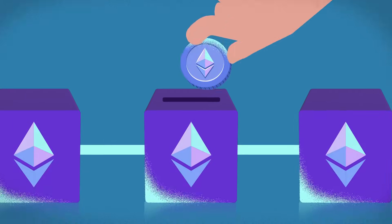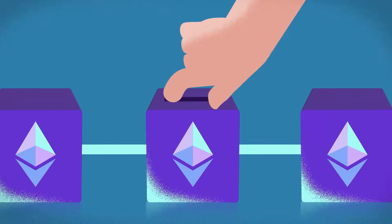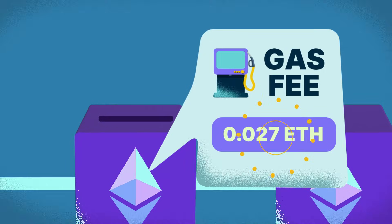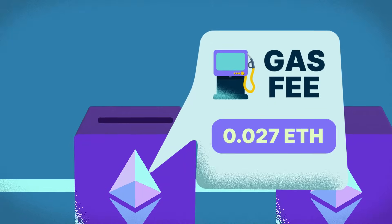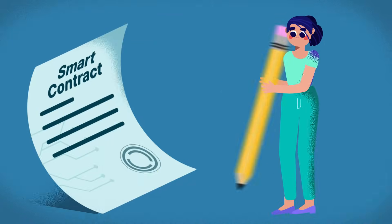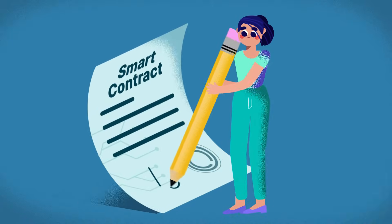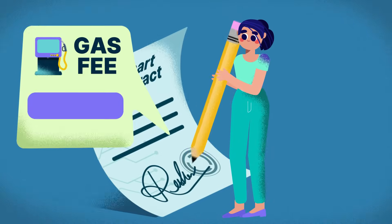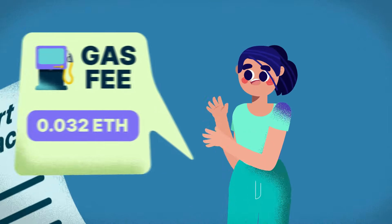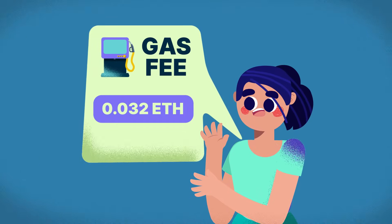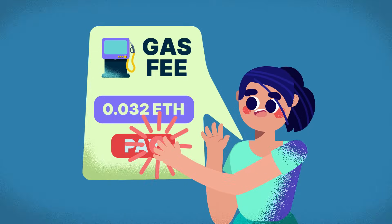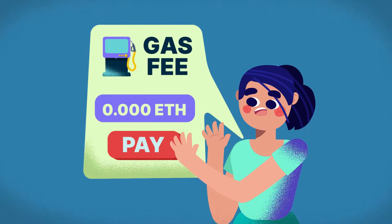If you've ever used a blockchain like Ethereum, you've probably noticed those gas fees that appear every time you make a transaction, whether you're sending crypto or interacting with a smart contract. Ever wondered why these gas fees keep popping up and why you have to pay them every single time?